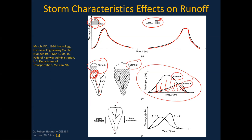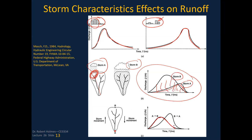If storm movement goes from downstream to upstream (A to B), you get an early peak that doesn't draw out as far. If the storm moves from upstream to downstream (B to A), you get a later, higher peak because the flood wave of water already dropped on the watershed moves along with the storm. Both basically end at about the same time, but the peak is later and higher in the downstream-moving storm scenario.